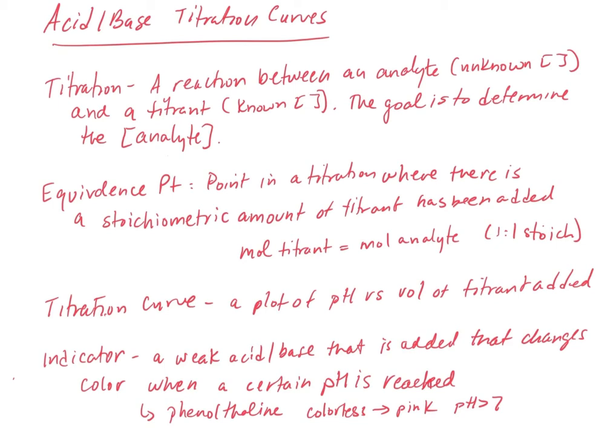The equivalence point is really key because when we reach it we can figure out how many moles of titrant we put in based on the volume and concentration of the titrant. Knowing that moles of titrant equals moles of analyte at that point, we can figure out how many moles of analyte we have and then calculate its concentration. That's really the key point of the titration.